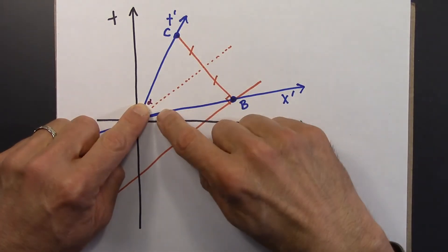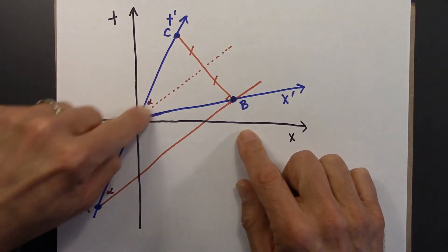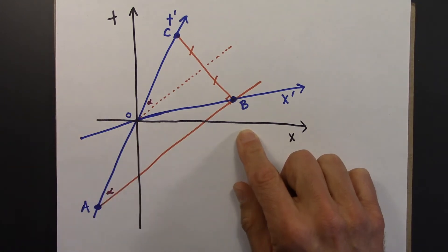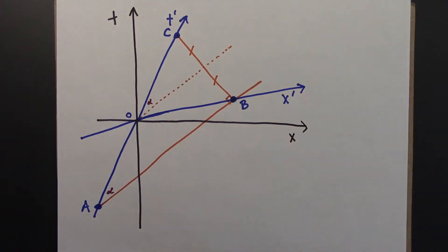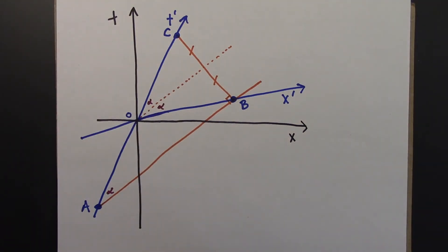So I'm going to draw this to indicate that those lengths are the same. And if that's the case, then this triangle and that triangle are similar. And that means that that angle is alpha as well. We are almost there.